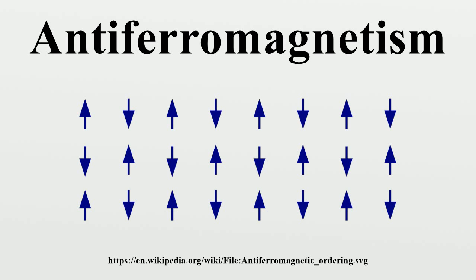Organic molecules can also exhibit antiferromagnetic coupling under rare circumstances, as seen in radicals such as 5-dehydroemxyliline. Antiferromagnets can couple to ferromagnets through a mechanism known as exchange bias, in which the ferromagnetic film is either grown upon the antiferromagnet or annealed in an aligning magnetic field, causing the surface atoms of the ferromagnet to align with the surface atoms of the antiferromagnet. This provides the ability to pin the orientation of a ferromagnetic film, which provides one of the main uses in so-called spin valves, which are the basis of magnetic sensors including modern hard drive read heads.